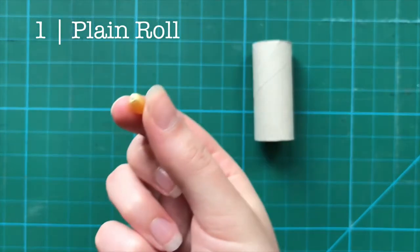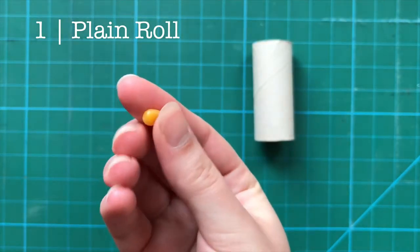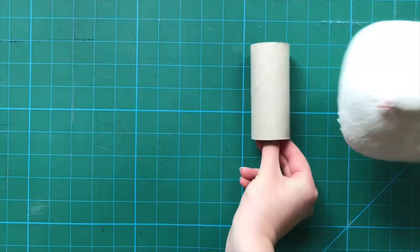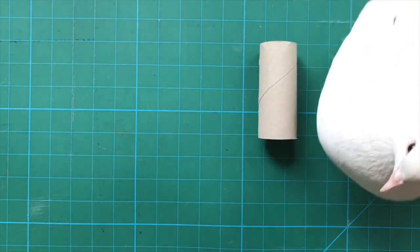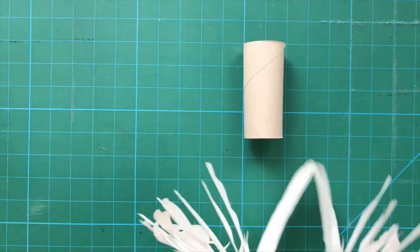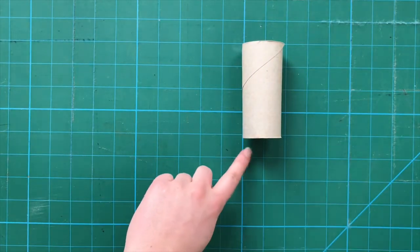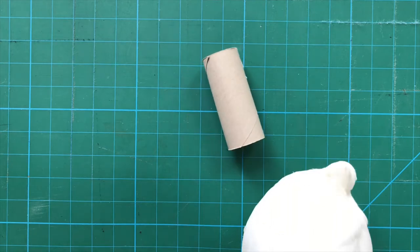Number one, plain roll. An unaltered roll is a good toy for many pigeons. You can put a treat inside it to increase intrigue. They can be used to play fight or for foraging. Tallulah likes to play a game where I stand them up on a table and she runs around grabbing them and throwing them off the table. She's adorably impatient waiting for me to pick them up and put them back up for her.